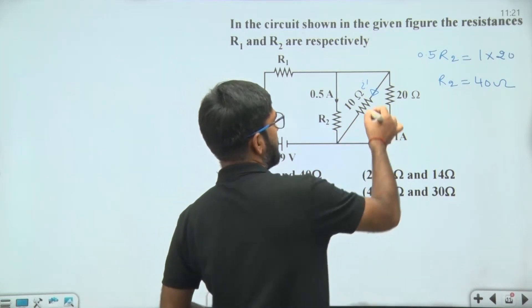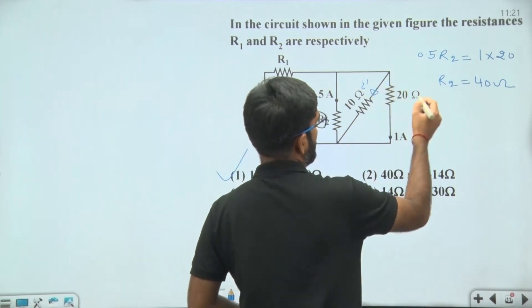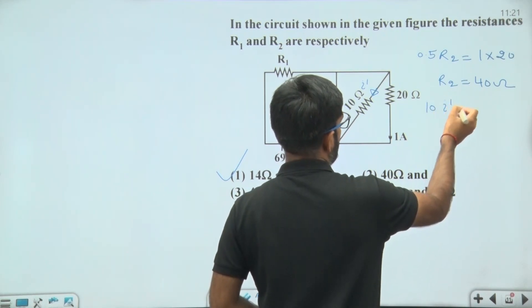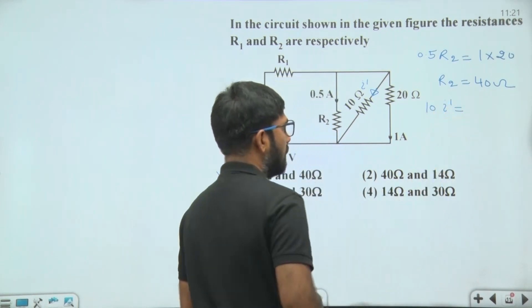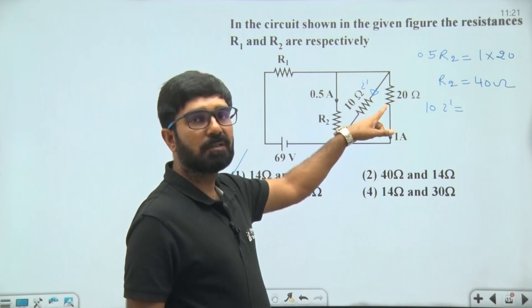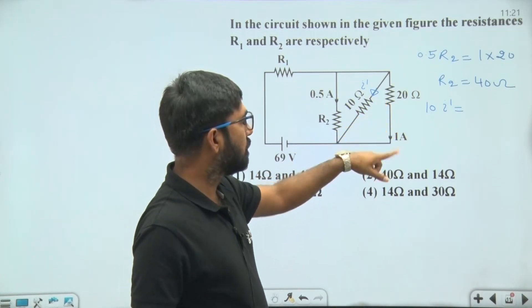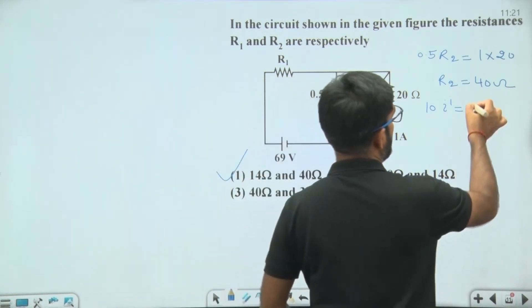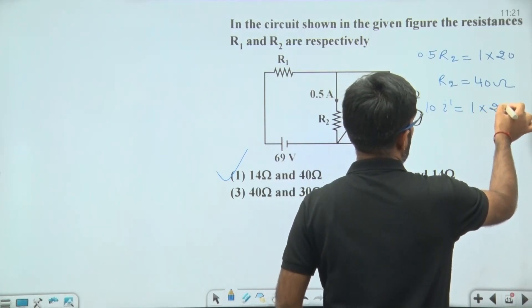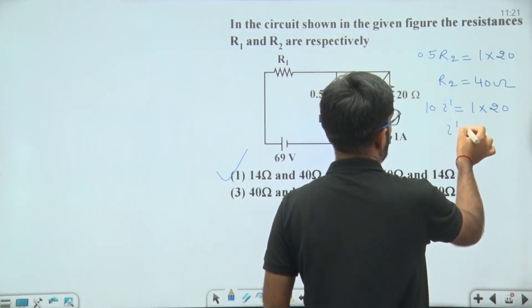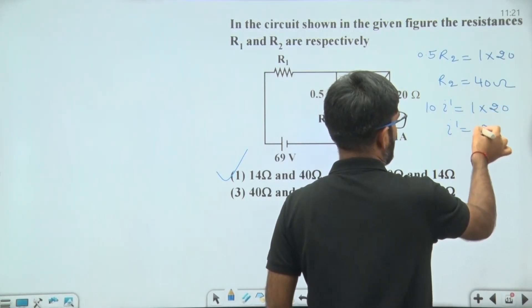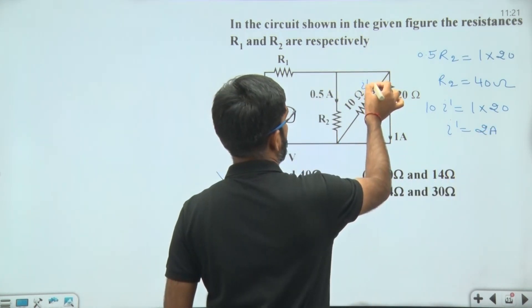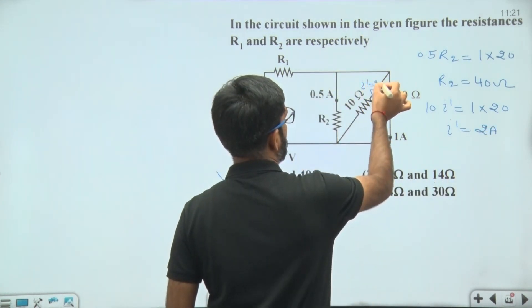The potential difference across the 10 ohm resistance is 10 × i-dash, which equals the potential difference across the 20 ohm resistance: 1 ampere × 20 ohm = 20 volts. Hence, i-dash = 2 ampere. So the current in the 10 ohm branch is 2 ampere and in the 20 ohm branch is 1 ampere.